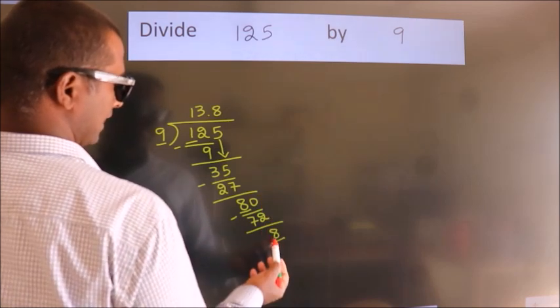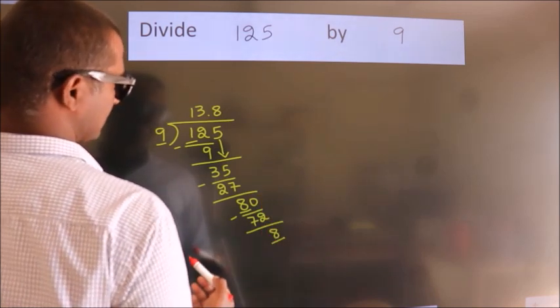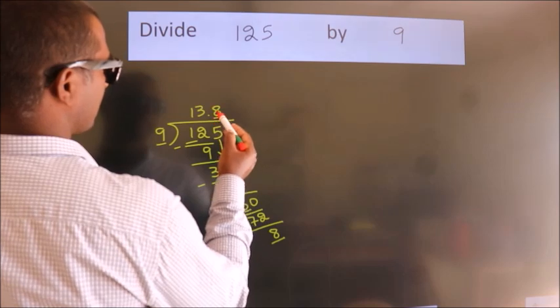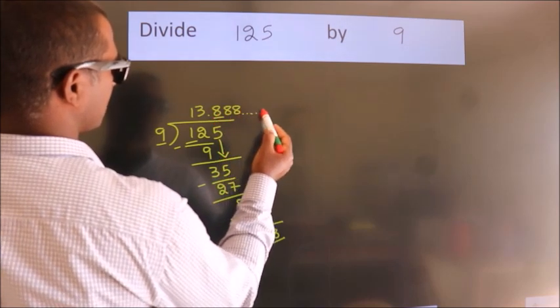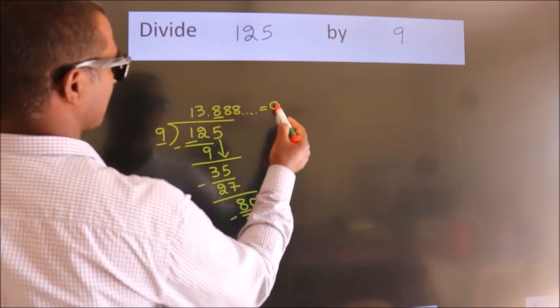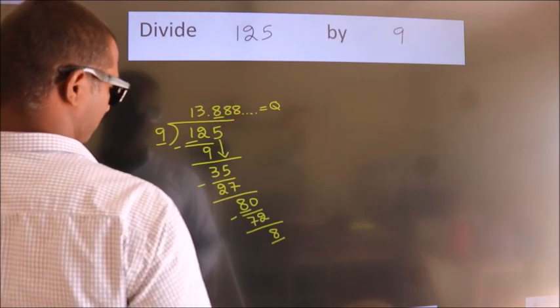That means this number keeps on repeating. So this is our quotient: 13.888 repeating.